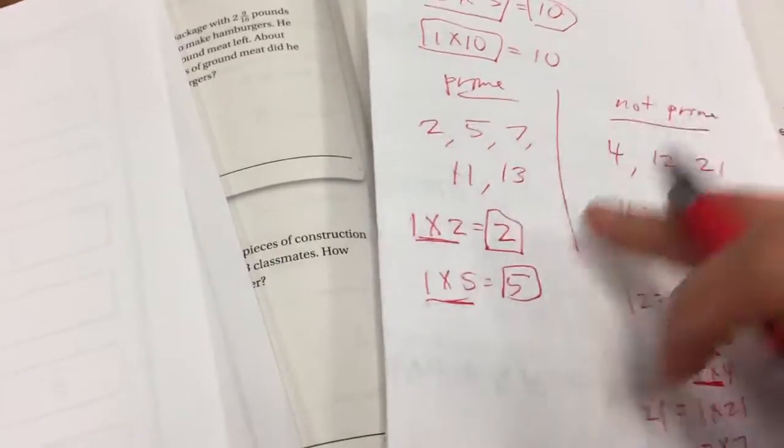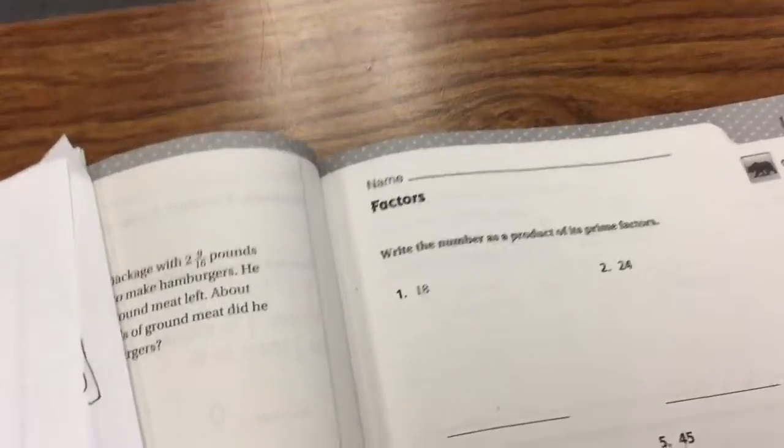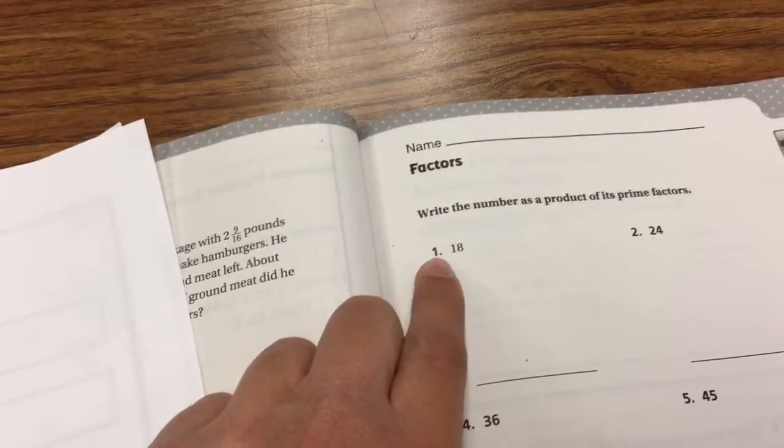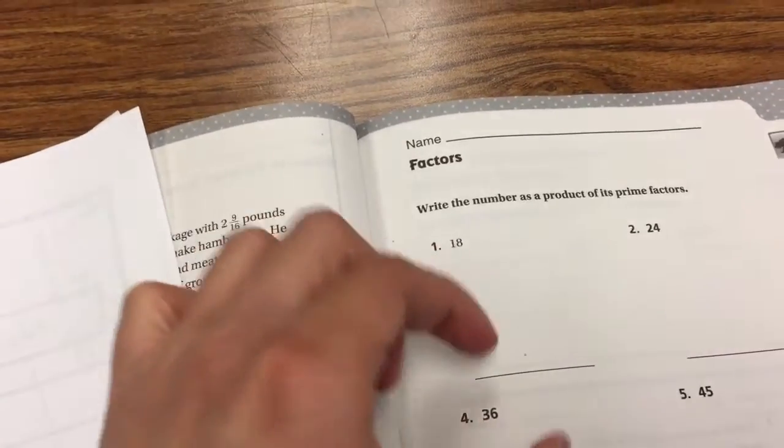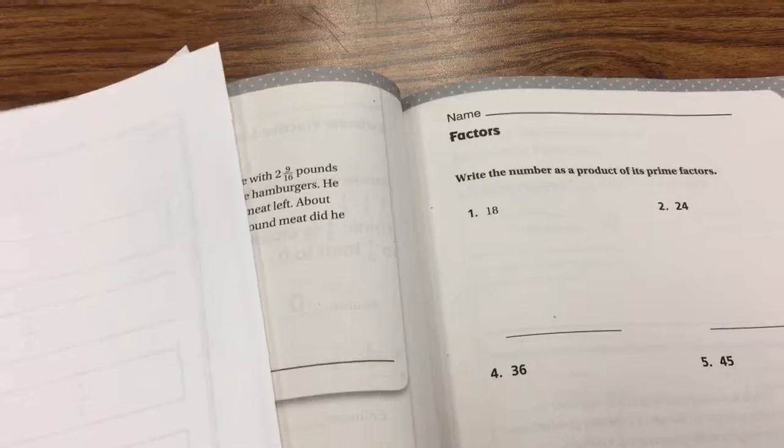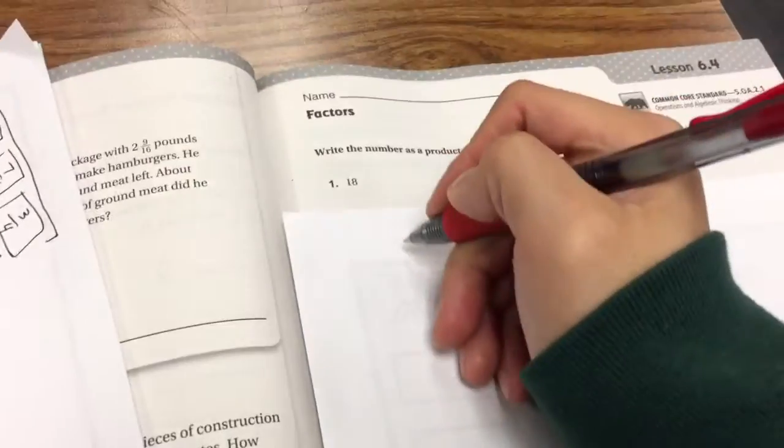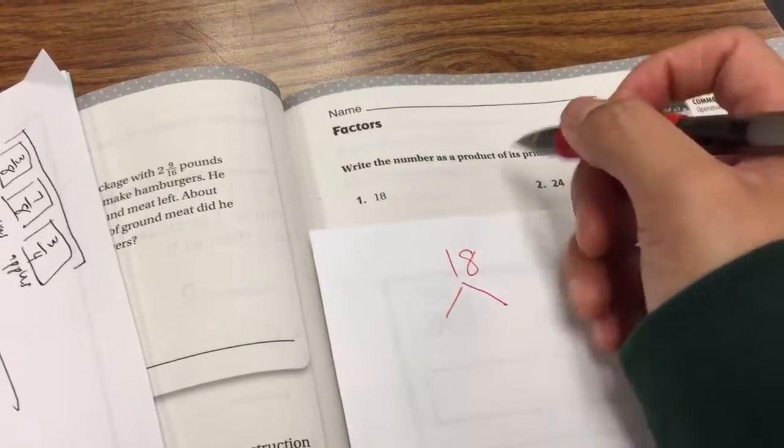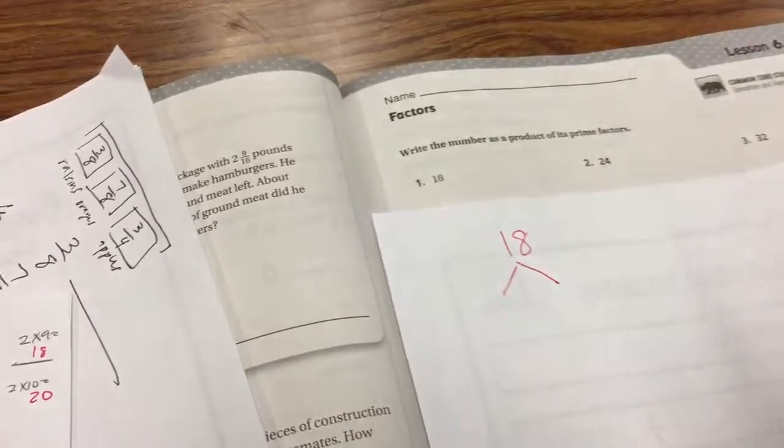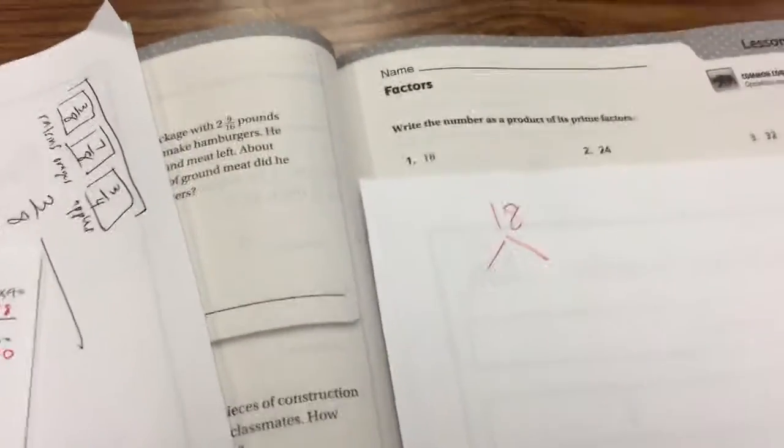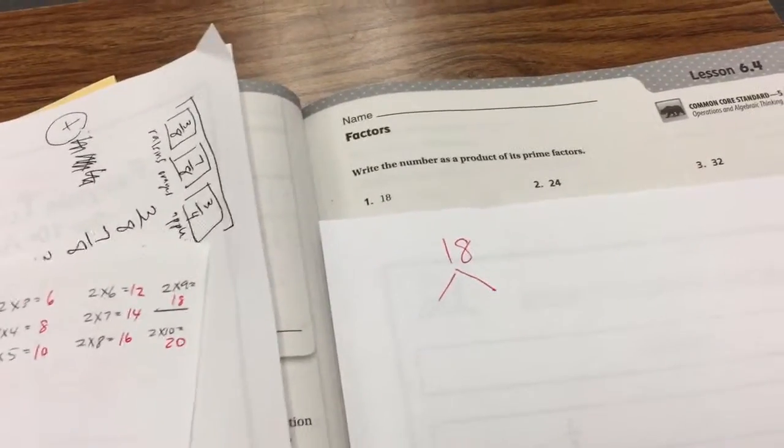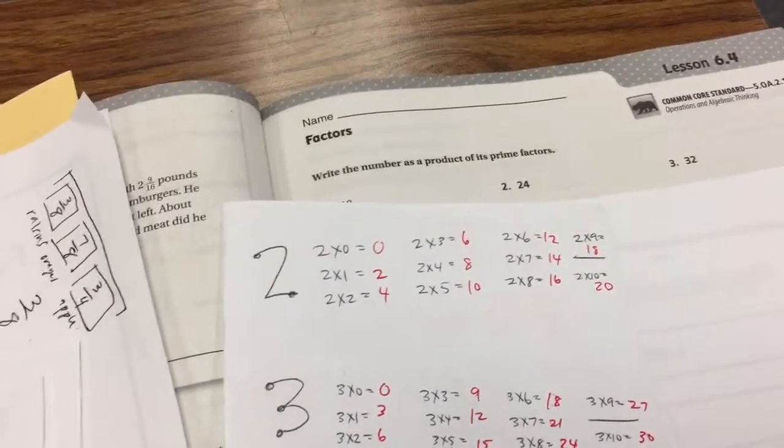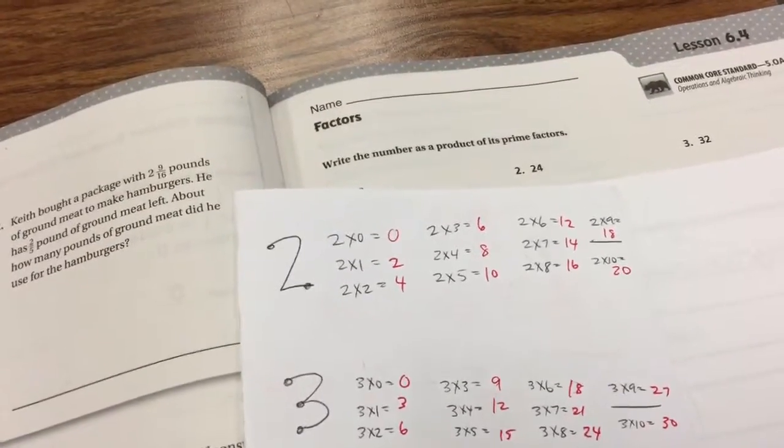That being said, now let's start going into what the directions was at. It said, write the number as a product of its prime factors. So what they want us to do is they want us to take that number and find the factors to get that. But at the end of the answer, they only want those numbers to be prime. And so we're going to start with something called a factor tree. A factor tree will start with the number, the product at the top. And below it will be the factors that we multiply to get to that prime factor. If you know your multiplication tables, this lesson will be a cinch for you. But in the meantime, here's how to use our cheat sheet.